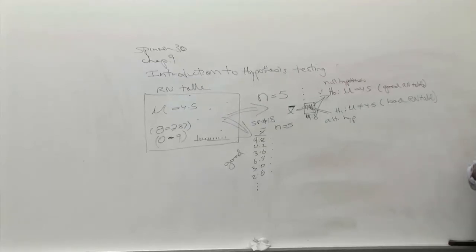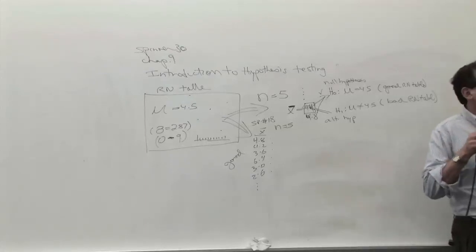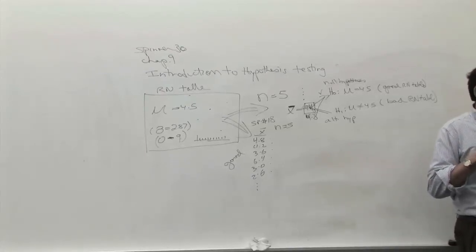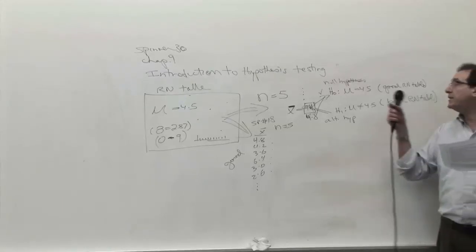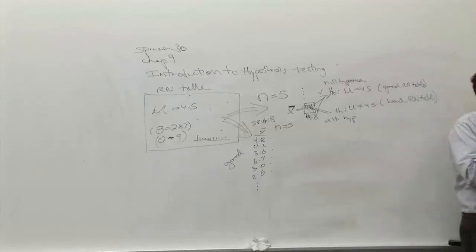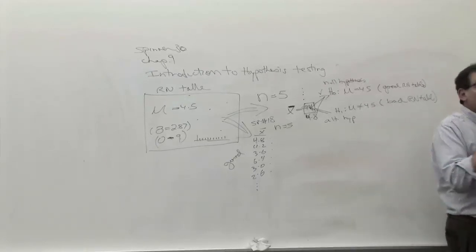4.8 is relatively close. It's not perfectly the same as 4.4. It's a little further away than 4.6, but it's still within the ballpark of a typical number that would come out of a perfectly good table. So it's important that I convince you of that, that 4.8 should be interpreted as, again, evidence that the table is good because it's not that far away from 4.5.